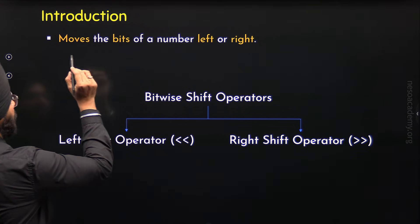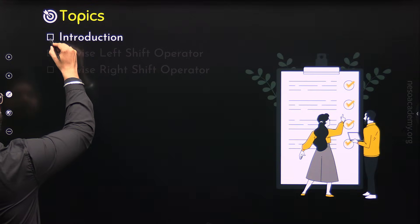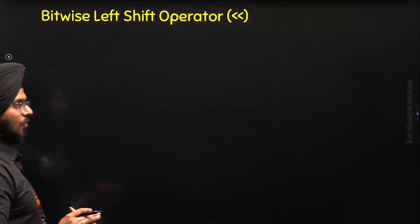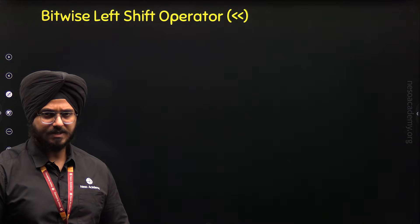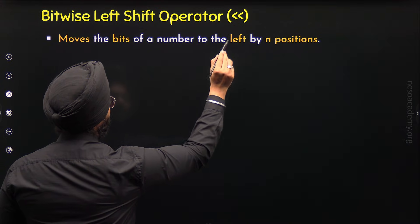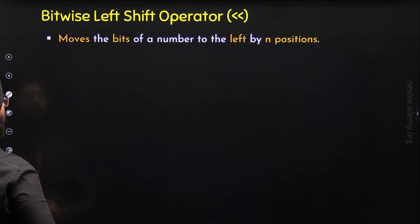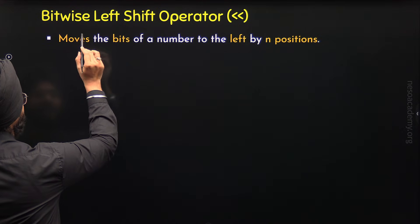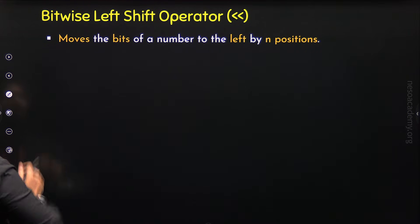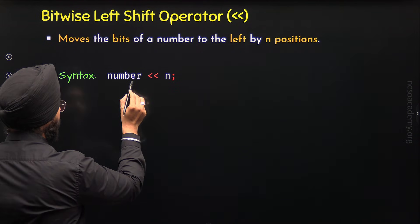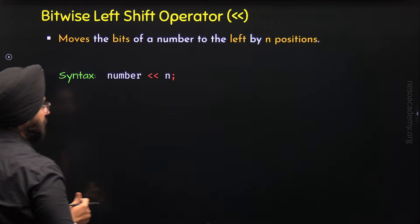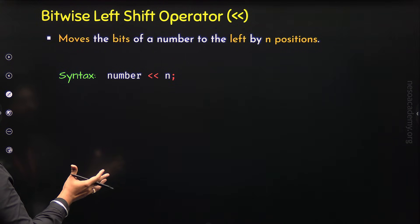We are done with the introduction to bitwise shift operators. Now let's move to the bitwise left shift operator. It allows us to move the bits of a binary number to the left by n positions. The syntax requires specifying the number, then the left shift operator, then the value of n, where n represents the number of positions to shift.